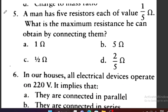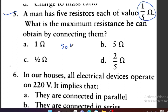Question number 5: A man has five resistors each of value one-fifth ohm. What is the maximum resistance he can obtain by connecting them? Maximum resistance: five times one-fifth ohm equals one ohm. Option A is the correct one.